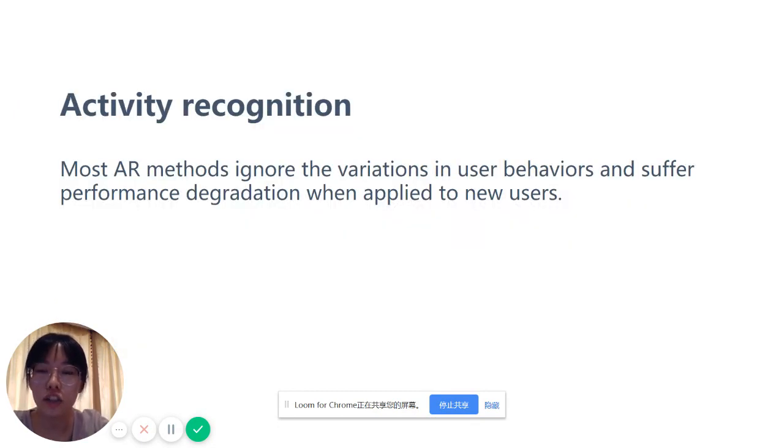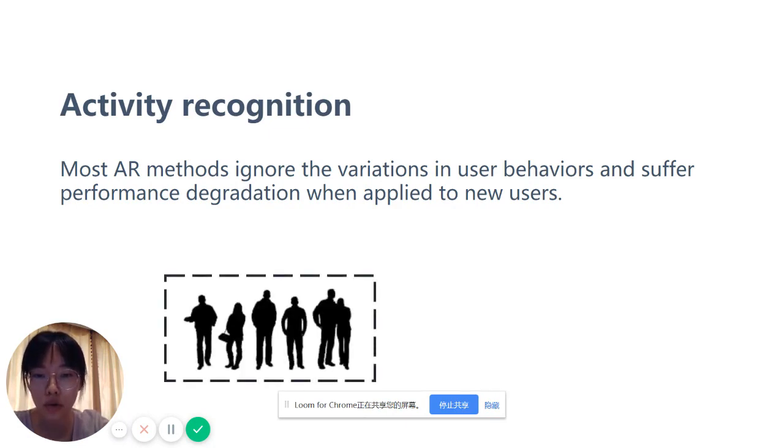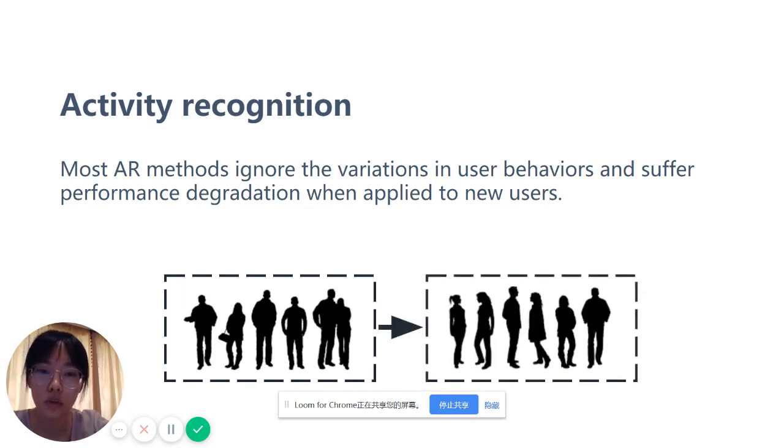First, let me introduce some existing problems. For activity recognition, most methods merge all data from training users. The variations in how users perform activities are usually ignored, and because of this variation, activity recognition accuracy usually drops when a well-trained model is applied to new users.